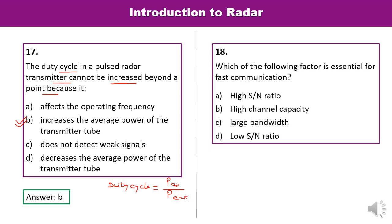Question 18: Which factor is essential for fast communication? Options: high SNR, high channel capacity, large bandwidth, or low signal-to-noise ratio. For fast communication, high signal-to-noise ratio is required. That is the correct answer.